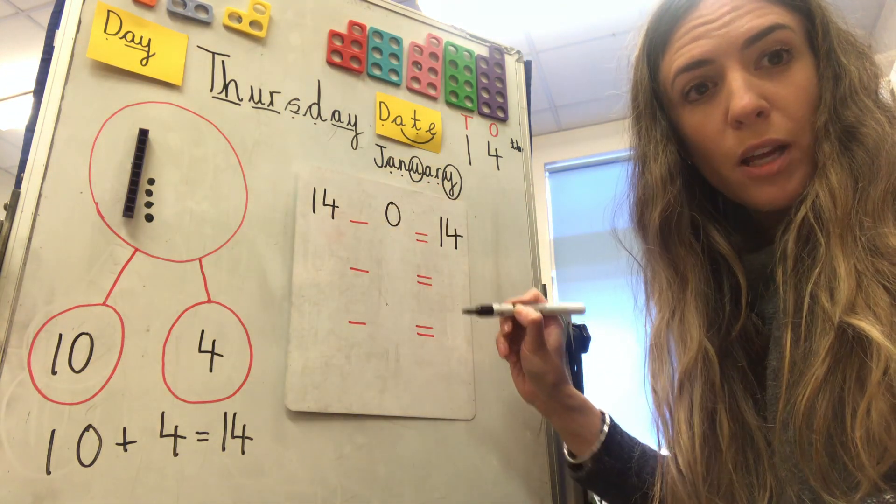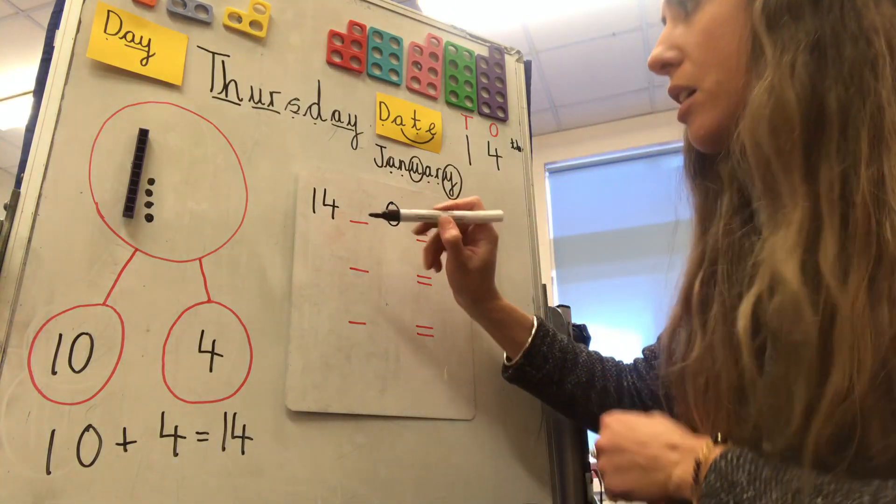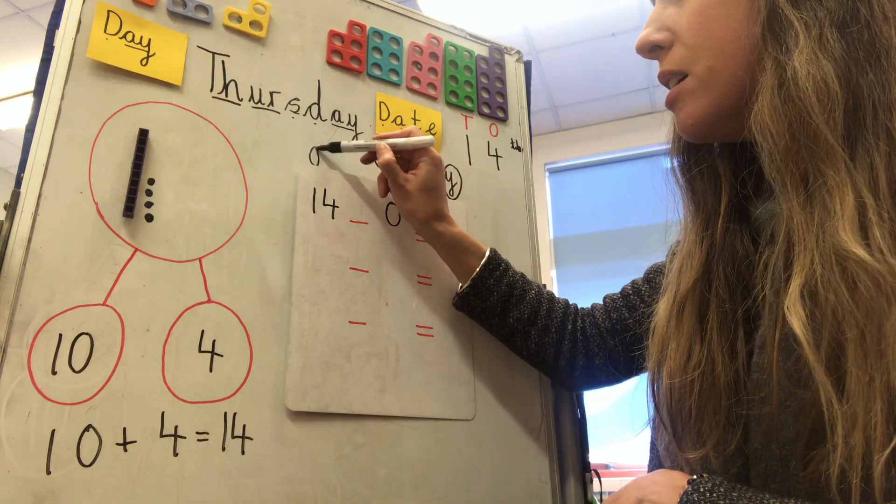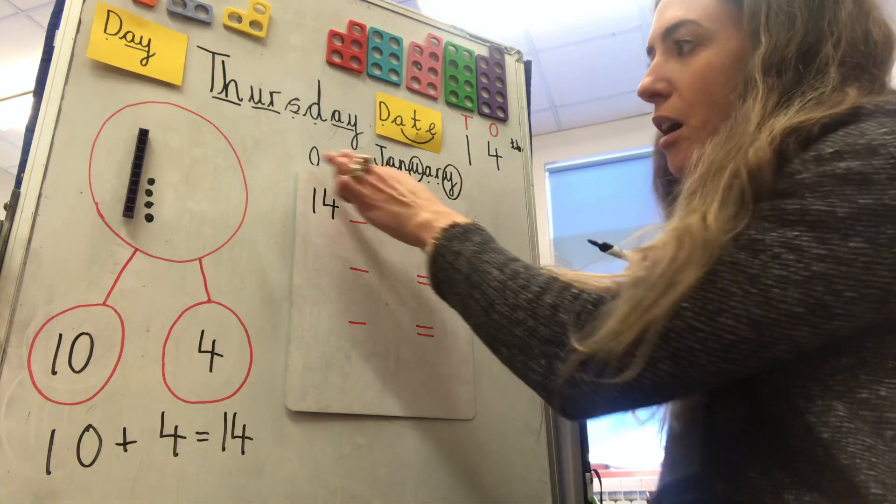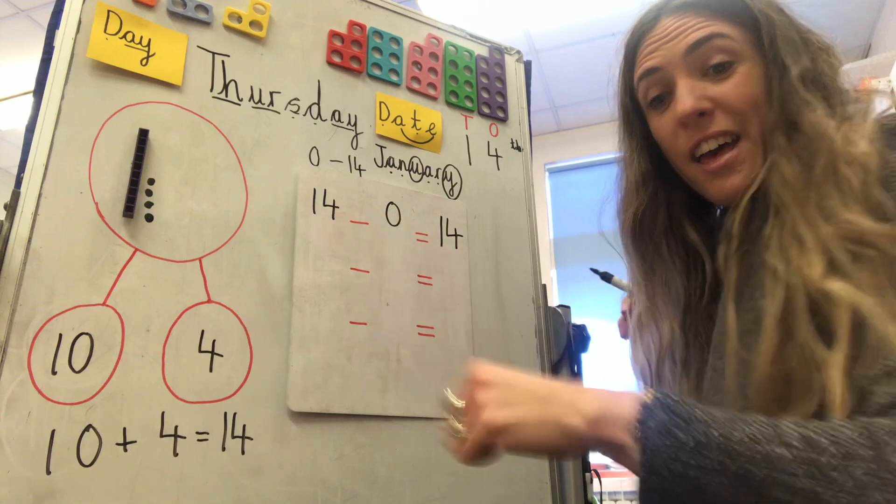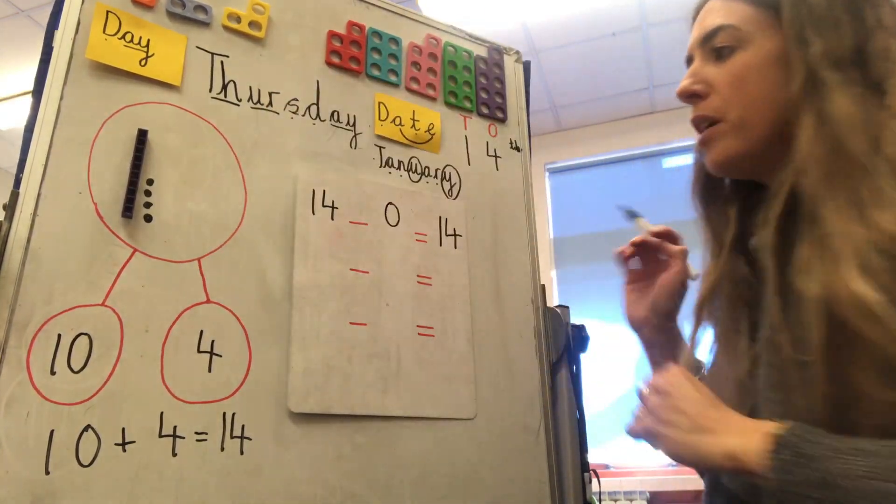Could it be the other way around? Like when we swap our numbers for our addition number sentences? Could I have zero here? Zero take away fourteen? No, I can't because there's not enough there. If I've got zero, I can't take away fourteen. So, we'll rub that one out. Okay.